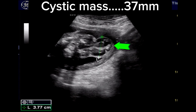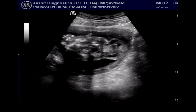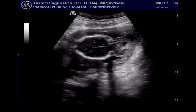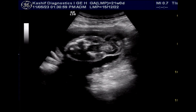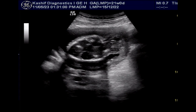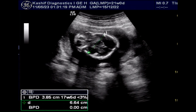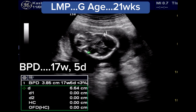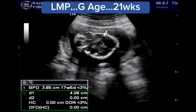Encephalocele happens when the neural tube does not close completely during pregnancy. The result is an opening in the skull. The most common site is at the back of the head. The fetal head is also small according to BPD.